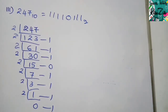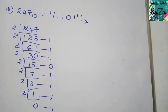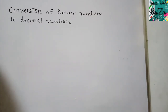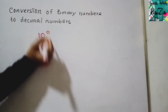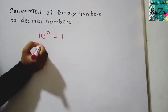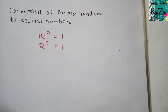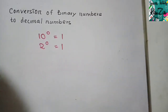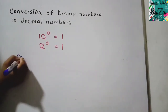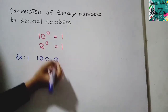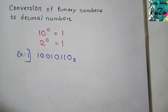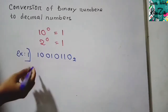Now let's see how to convert binary numbers back to decimal numbers. In the previous conversion we continuously divided, but here we multiply instead. You should know two things: 10 to the power 0 equals 1, and 2 to the power 0 equals 1. We'll be working with powers of 2. Take the binary number 10010110 to the base 2 — we're going to convert this into a decimal number.